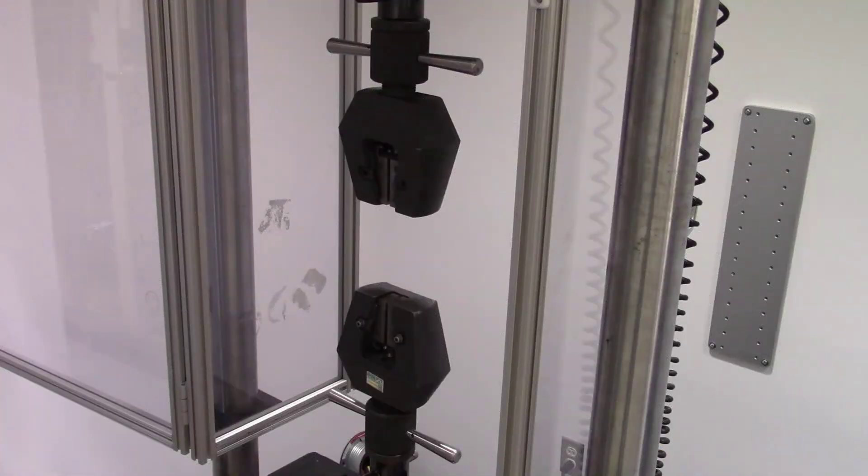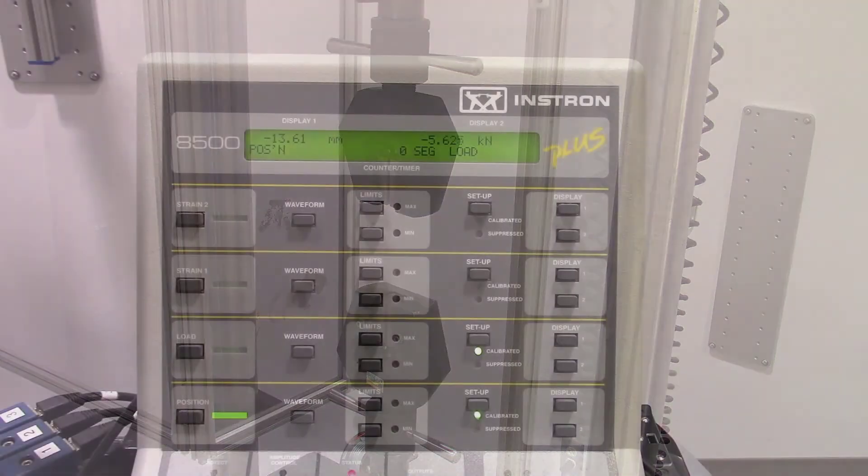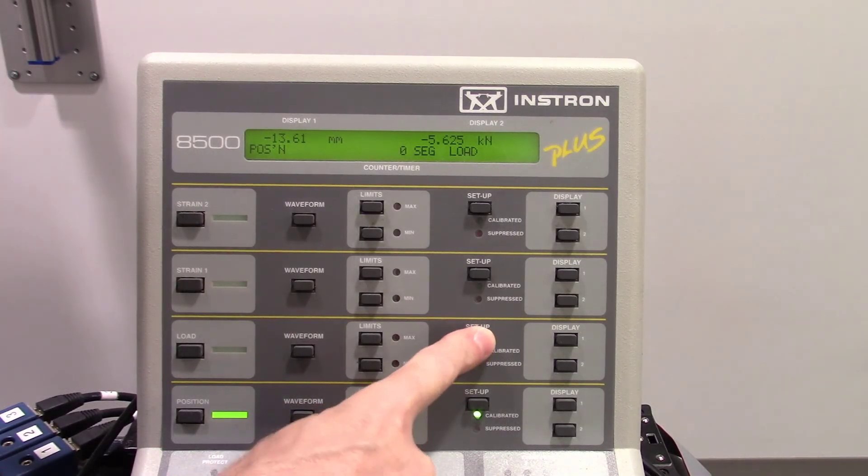Before calibration, verify the load cell is unloaded with the grips empty. Press the SETUP button below the flashing green LED.